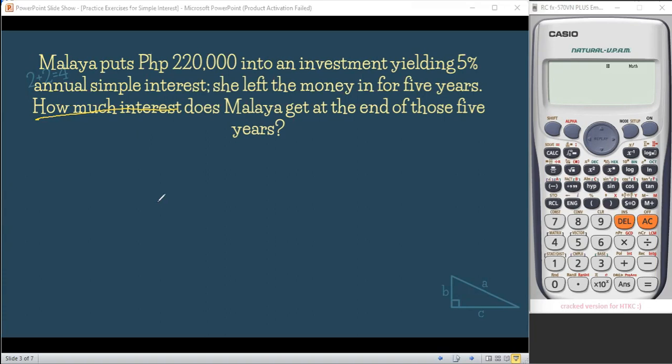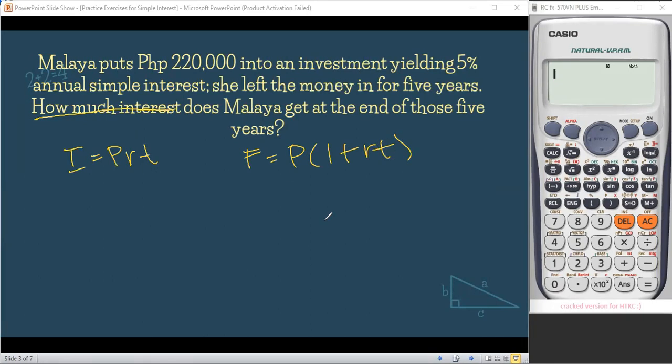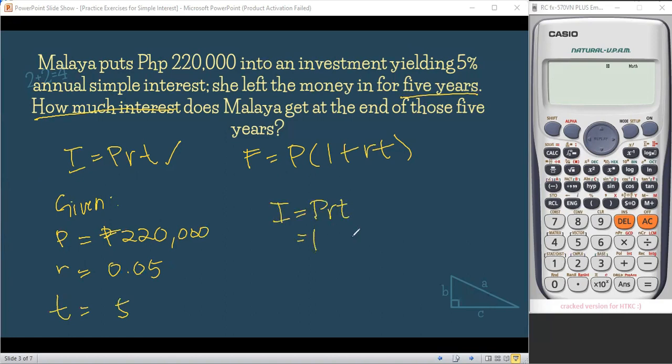And when we are dealing with simple interest, we have two main formulas. We have I equals PRT and the other one is F equals P times one plus RT. Now my dear students, we'll know that this is what we'll use once the future value is unidentified. Meaning, when it's not given in the problem, the future value, this is what we'll use. Now, second step, let us identify the given. So for the given, we have our principal amount which is P220,000. And also, we have the rate of 5%, which in decimal is 0.05. And also, we have the time, five years.